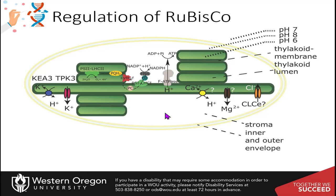This increase in the pH of the stroma causes the release of magnesium from the thylakoid lumen. Since magnesium is the cofactor for the Rubisco enzyme, this will increase the efficiency of the dark reactions when you have sunlight present and are pumping protons into the thylakoid space. This helps to couple the Calvin cycle with the light reactions so that you have more Calvin cycle activity when light is present and photosynthesis is active.